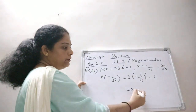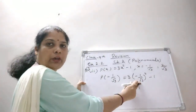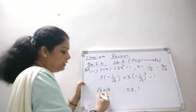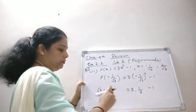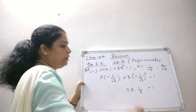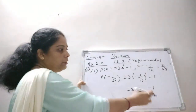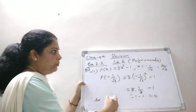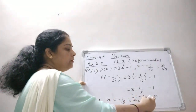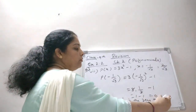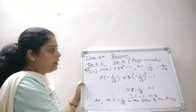Minus times minus is plus, and 1² = 1, and √3² = 3. So we get 3 × (1/3) minus 1. The 3s cancel, giving 1 minus 1 = 0. We got 0, so x = minus 1/√3 is the zero of the given polynomial P(x).